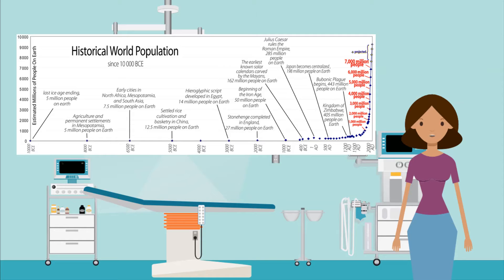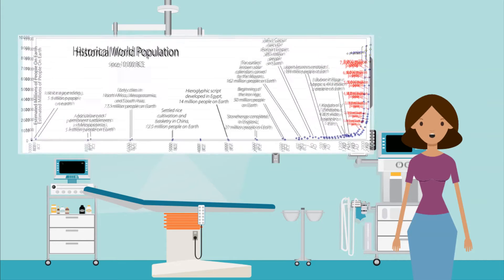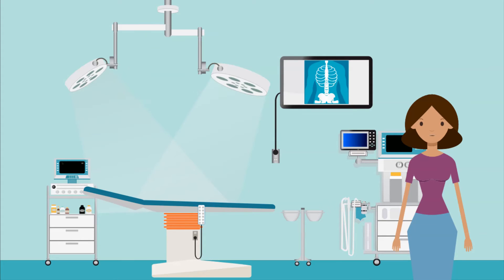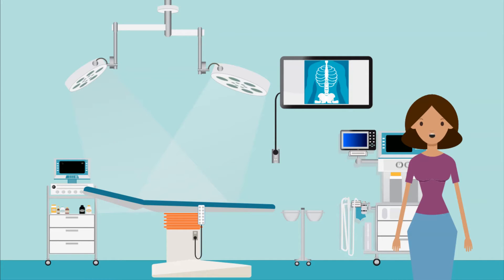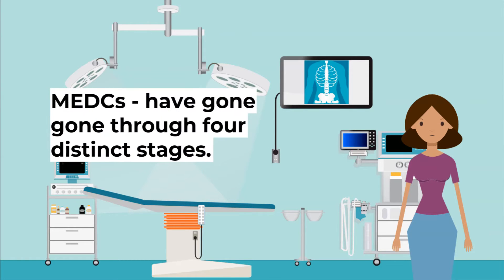Now let's talk about birth and death rates. The world population is growing at an ever-increasing rate, and this is likely to continue until 2050. Population changes by the number of births minus the number of deaths, plus or minus the number of people migrating. The difference between the crude birth rate and the crude death rate is the rate of natural increase.